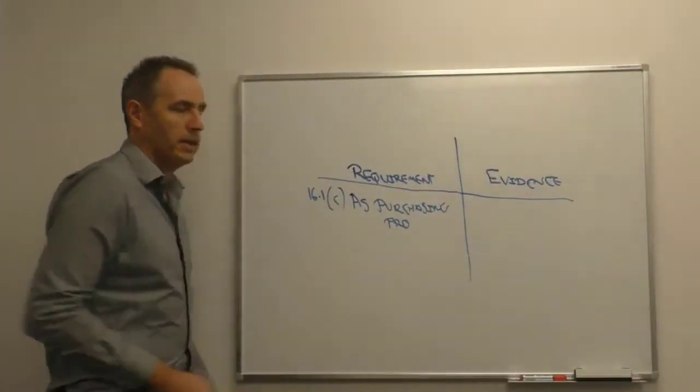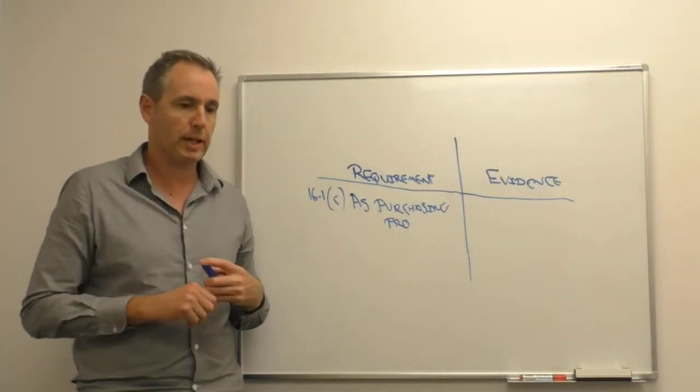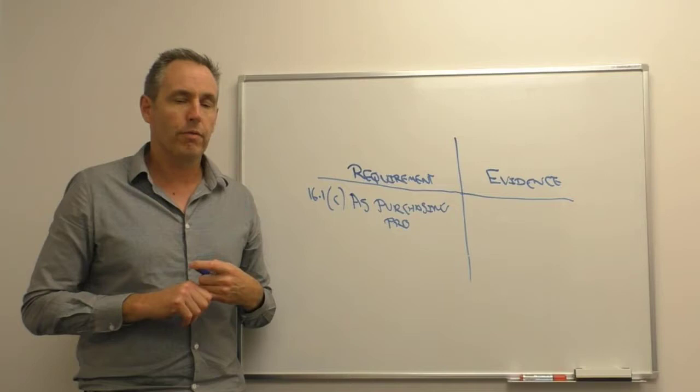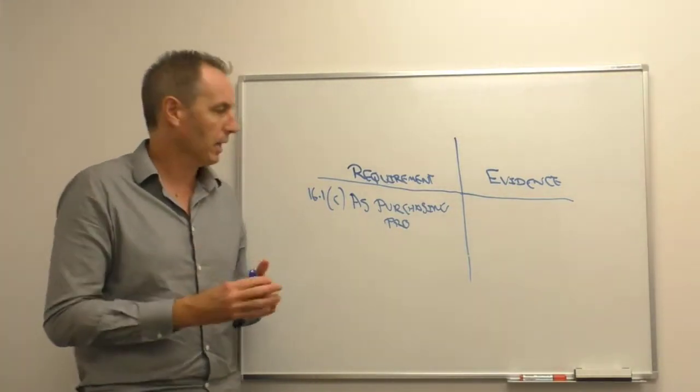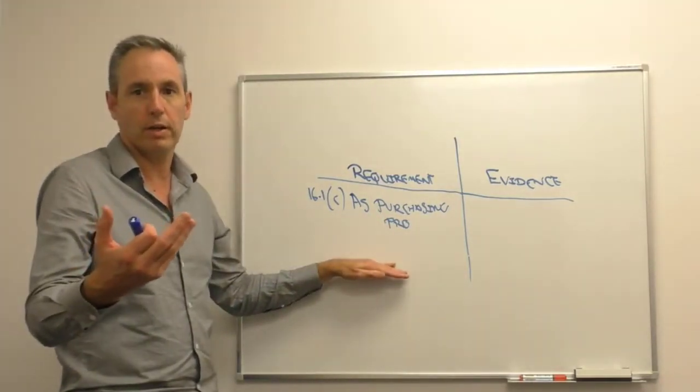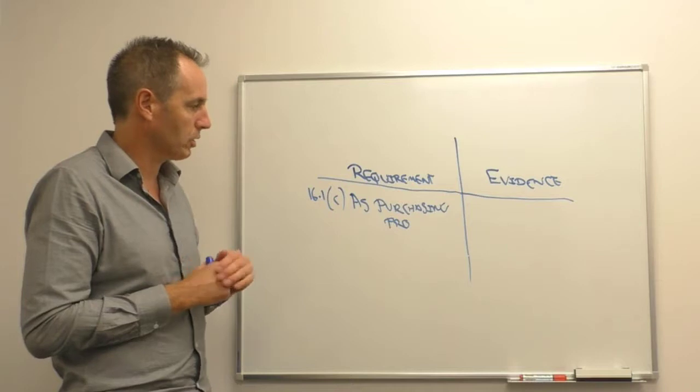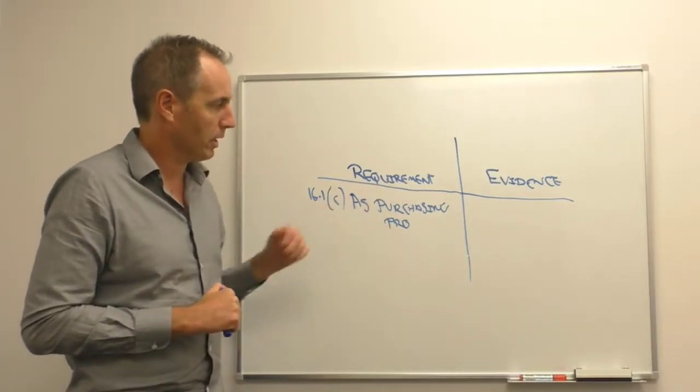It's also a good road test for ourselves as the auditor, particularly if we think there's potentially a non-conformance finding. Number one, we can't call something a non-conformance unless it's specifically required somewhere in that procedure or the audit criteria. I have seen auditors fall into the trap. Here's something I think they should do in their purchasing process or here's something I think they could improve.